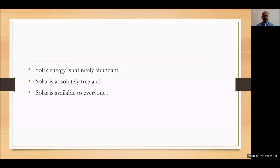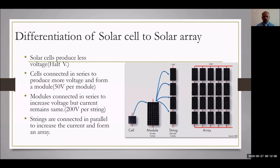Now, differentiation of solar cell to solar array. A basic solar cell is a tiny element that produces less voltage — nearly half a volt. A number of solar cells connected in series forms a module, which produces more electrical energy compared to a single cell. A number of solar modules connected in series form a string. And a number of strings connected in parallel form the solar array. The solar array is what is available in our solar power plants.